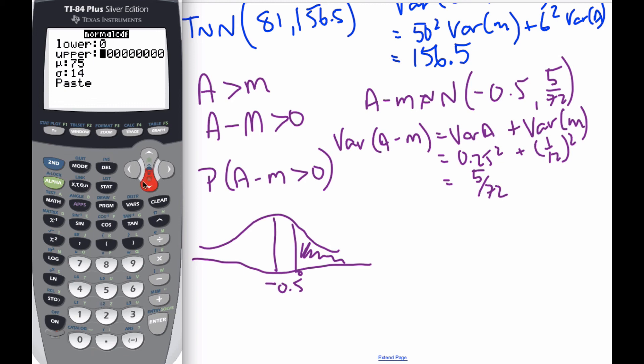My lower is 0. My upper is a big number. This is negative 0.5. This is going to be 5 divided by 72 squared. Oh, this is variance I need to make this square root. So I'm going to be careful here. I want to go square root of 5 divided by 72. And that mistake I almost made is a very, very common mistake. So make sure you keep thinking about it. I've got standard deviation or variance.